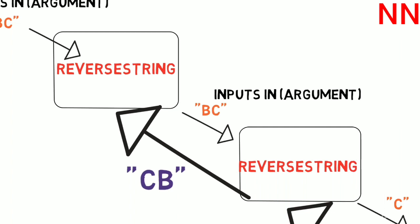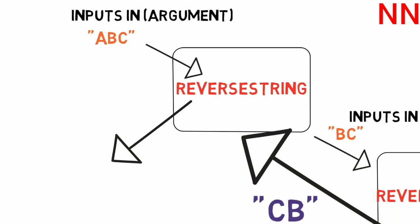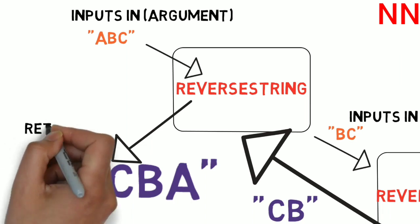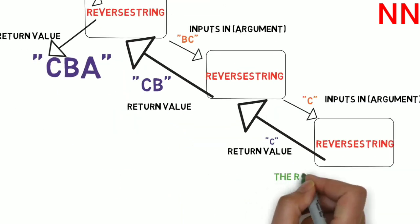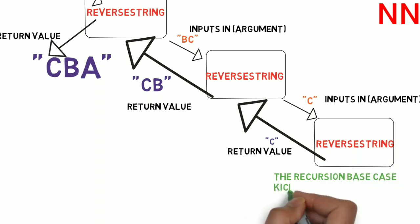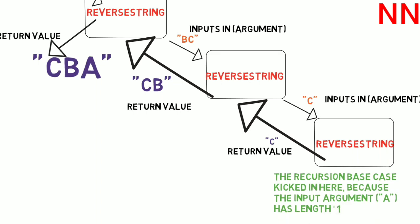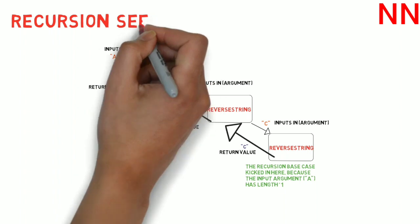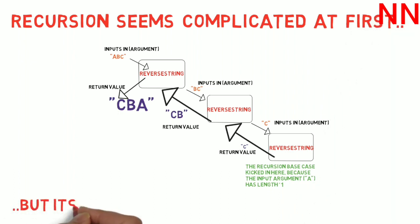In our very first call to reverse_string, we take the result 'cb' and append the part we are holding — that is 'a' — to the end, and we get 'cba'. Notice this is the completely reversed string that we were expecting. It's almost magical how recursion works. The base case kicked in on the third call because the input argument 'c' had just a length of one — a string of one character reversed is just the character itself.